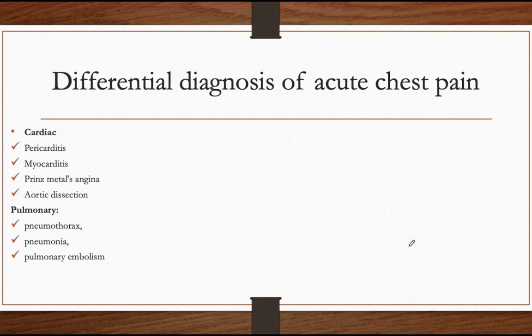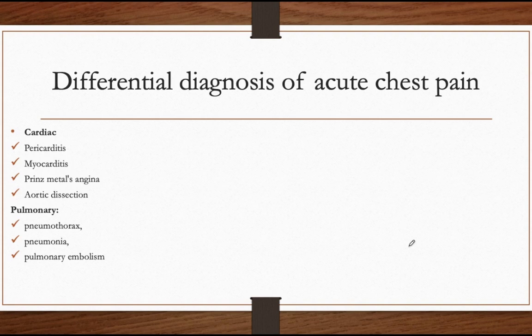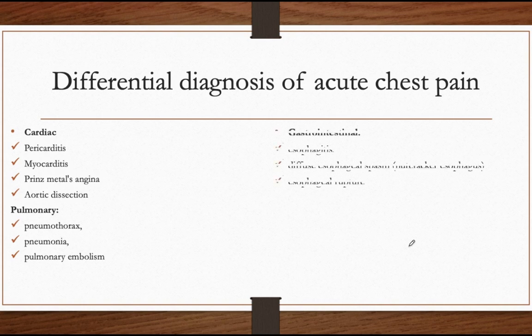On the pulmonary side, pneumothorax presents with sudden pain, absent breath sounds on the affected side, hypoxia, and a history of rib fracture or penetrating chest wound. Pneumonia presents with crackles or rales on auscultation, fever, and leukocytosis. Pulmonary embolism presents with sudden pain worsening with respiration, hypoxia, dyspnea, and calf swelling.